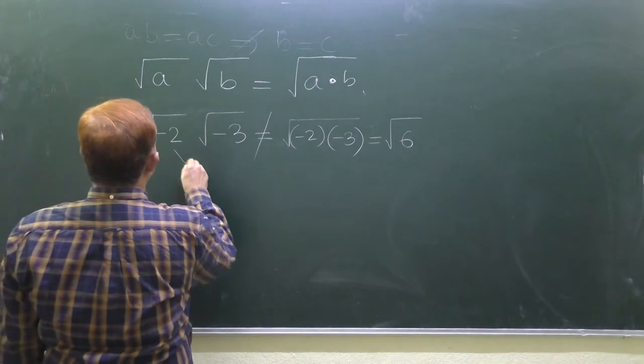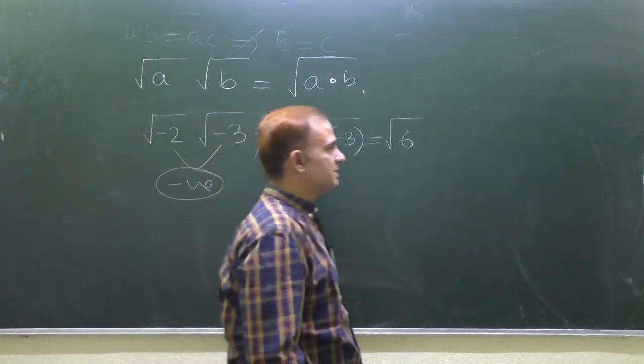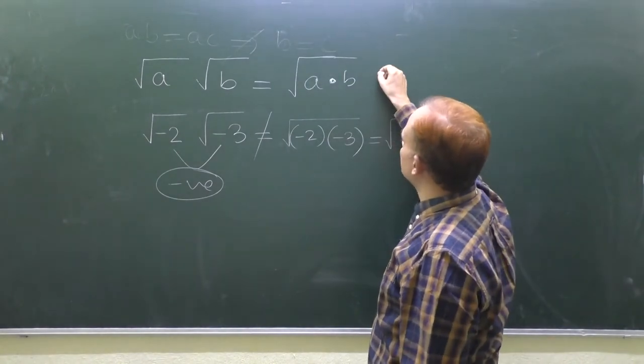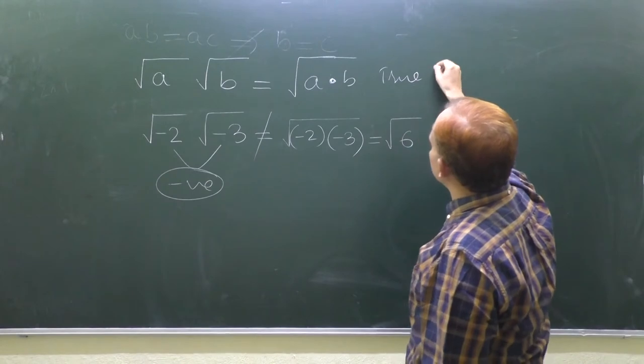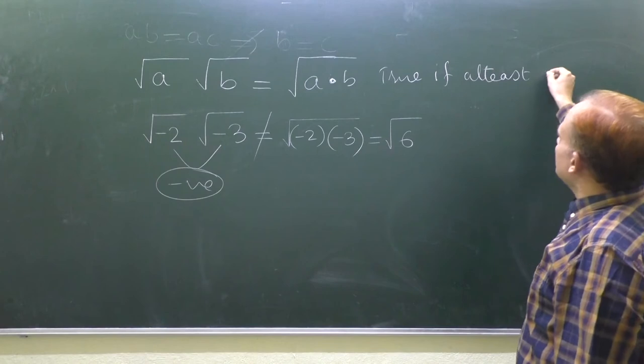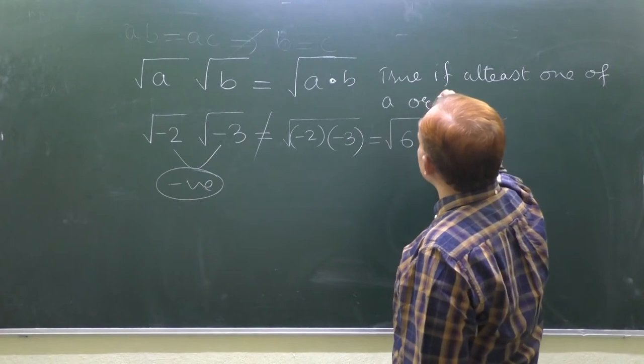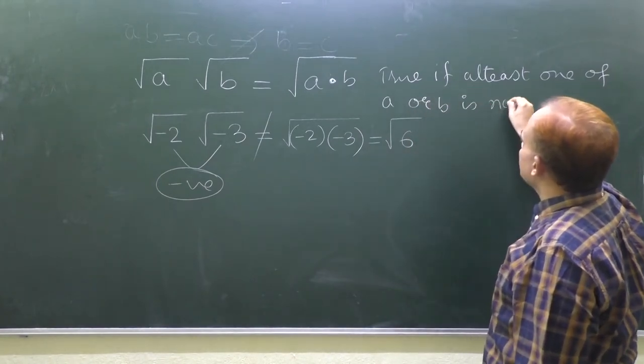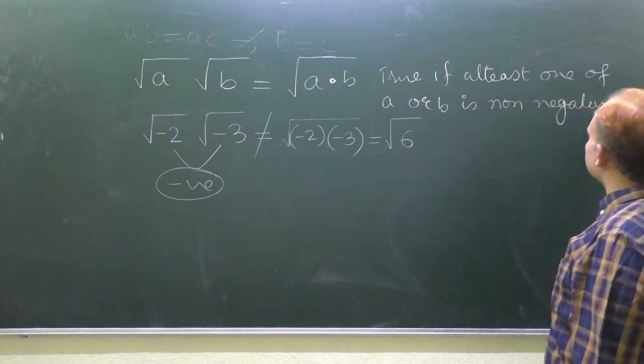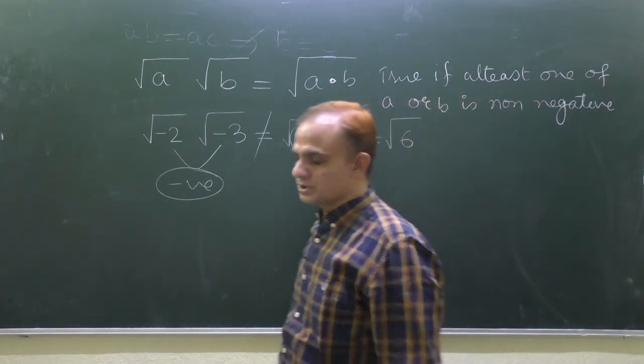Because both the numbers are negative numbers. Both the numbers are, what kind of numbers are they? They are negative numbers and this result is true when at least one of A or B is non-negative, but here you are seeing that both the numbers are negative. Therefore, this result is not true.